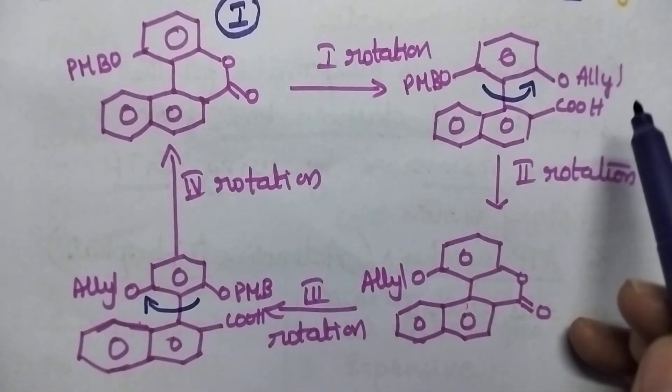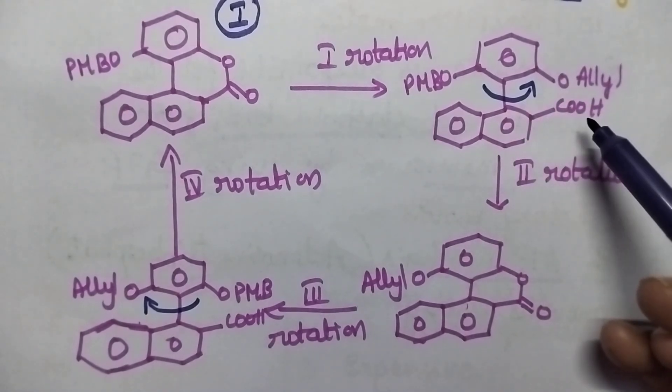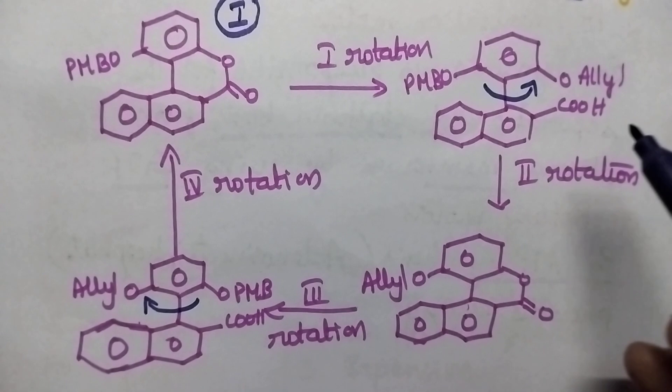In the second rotation, the rotation is always done along this single bond. As a result, the O-allyl group will move to the left side of the molecule.